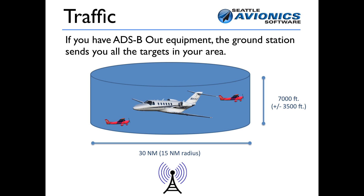Traffic is the most confusing part about ADS-B. If you have ADS-B out equipment, life is good. Assume you're the Citation jet in the middle of that blue hockey puck — a 15 nautical mile radius, 30 nautical mile diameter — showing traffic within 3,500 feet plus or minus of you. The ADS-B ground station broadcasts the targets in that area near you, so you would see the two red Cessnas nearby.